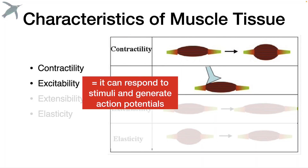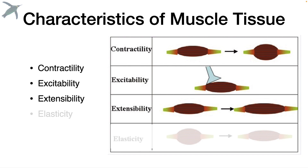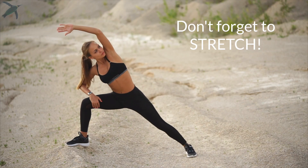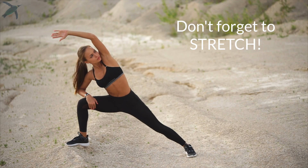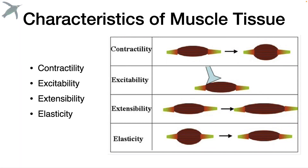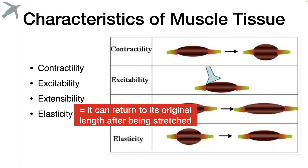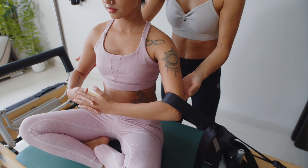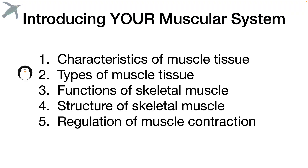Excitability means that muscle tissue can respond to stimuli and generate action potentials. Now that's not a unique feature — nervous tissue can do that as well. Extensibility means that muscle tissue can be stretched. And elasticity means that after a muscle is stretched, it will return to its original shape.